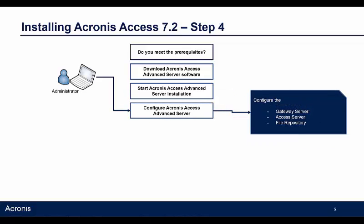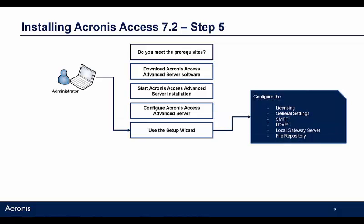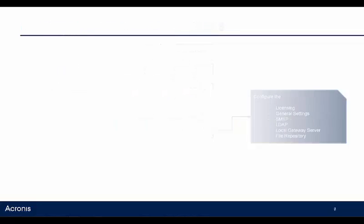When the installation is completed, you will have to configure the Gateway server, the Access server, and the file repository. The last step is the setup wizard, where you will configure the licensing, the general settings, the SMTP, LDAP, local gateway server, and the file repository.